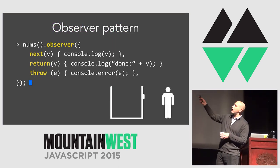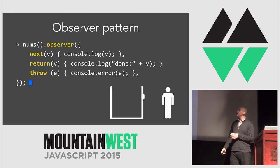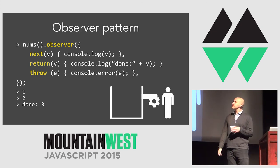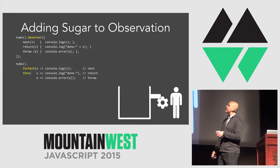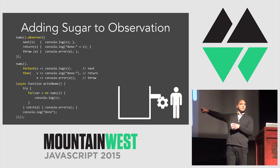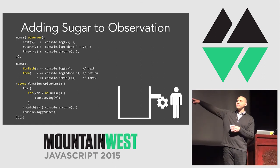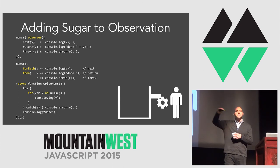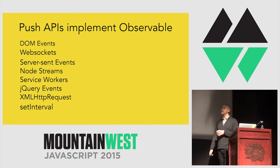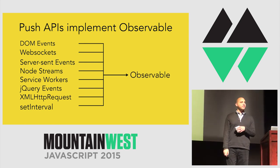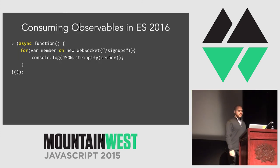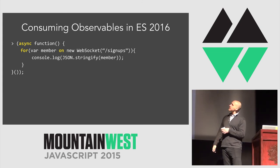The consumer hands the producer an observer — those three methods next, throw, and return — like three callbacks. The producer pushes values to the consumer by invoking those methods until it pushes the final return with done. So it's the same as iteration, just backwards. Once you realize observation and iteration are two different ways of doing the same thing, you can write code the same way regardless of whether you're iterating or observing. Your language should support both equally. Inside an async function, you can use the for-on loop to consume any observable — consuming all the data before continuing.